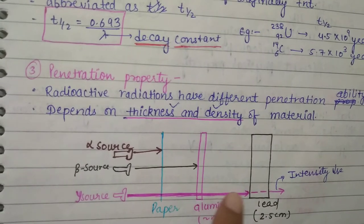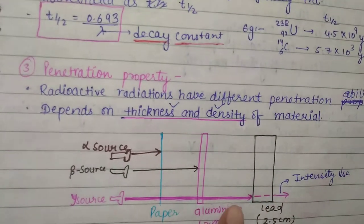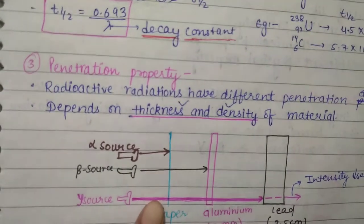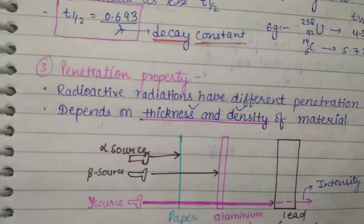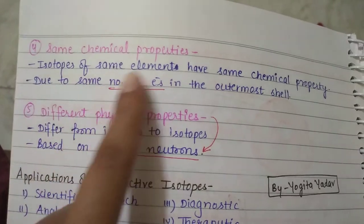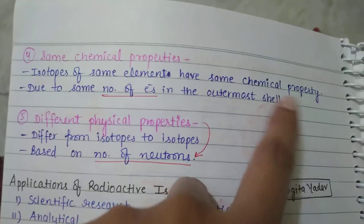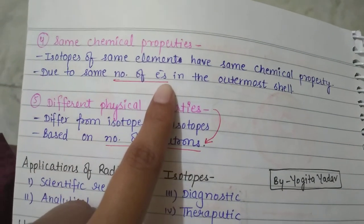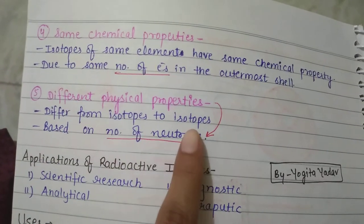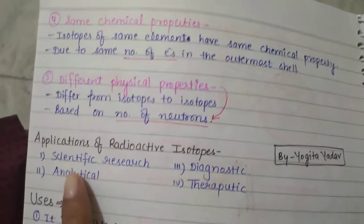The diagram shows how intensity decreases between the source and the shield for each radiation type. Isotopes of the same element share the same chemical properties due to the same number of electrons in their outermost shell. However, they have different physical properties based on their different numbers of neutrons.